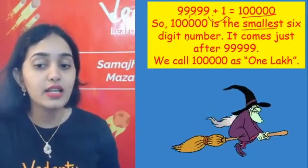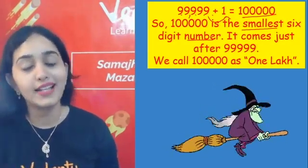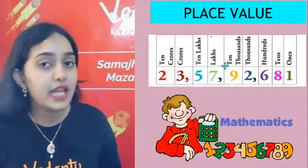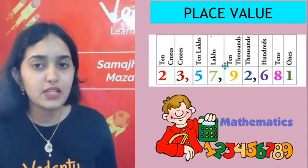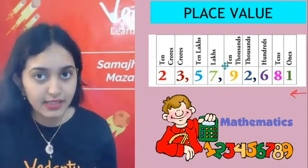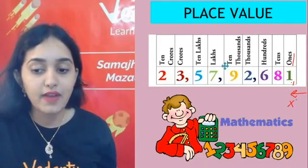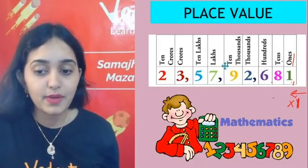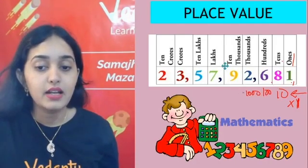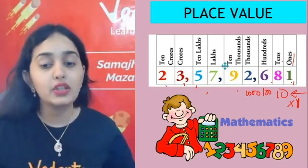Now let's learn place value. We always start from the right-hand side. The first place value is ones (1s). The second is tens (10s), then hundreds (100s), then thousands (1000), ten-thousands (10,000), lakh, ten lakh, crore, ten crore. We have to learn up to ten crore in this class. And this is where you put commas — after crore, after lakh, and after 1000.